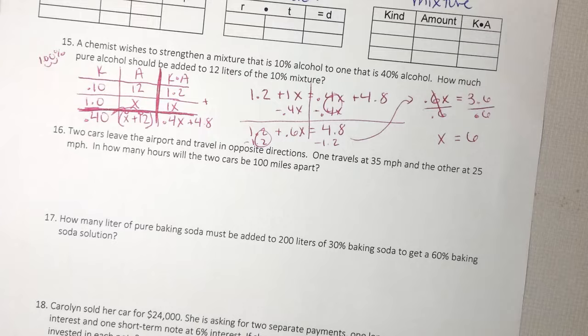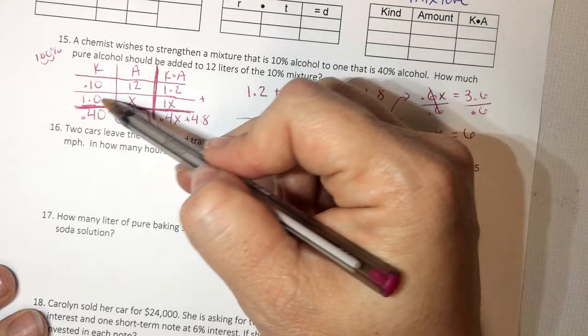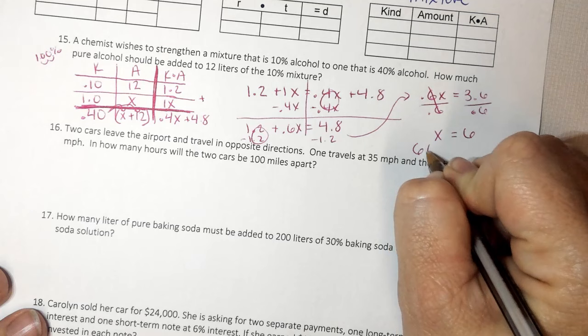Now I go back and read my question. It says, how much pure alcohol should be added to 12 liters? So how much pure? This is pure. And it's x. So x is 6. So 6 liters of pure.